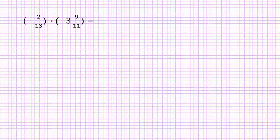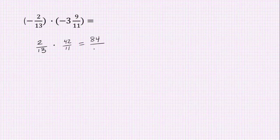Here's a multiplication problem. We've got a negative times another negative, so the answer will be positive. We can disregard those. We do need to get rid of the mixed number. So we've got 2 thirteenths times 42 elevenths. You can just multiply straight across. 84 over 143. This is our final answer.